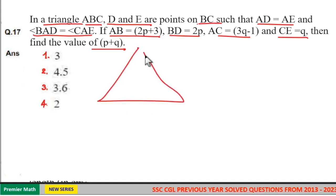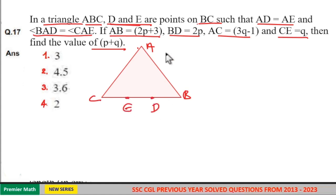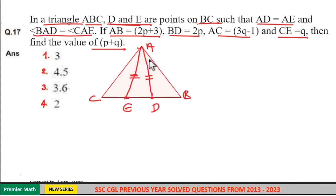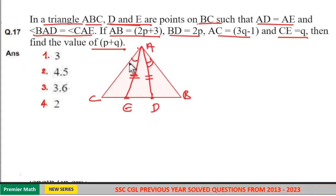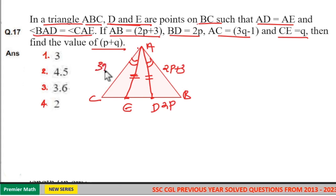Here, this is the triangle ABC. D and E are two points on BC. AD equals AE, meaning these two lengths are equal. Angle BAD is equal to angle CAE. AB is 2P plus 3, BD is 2P, AC is 3Q minus 1, and CE is Q.